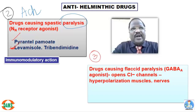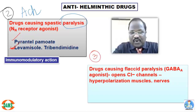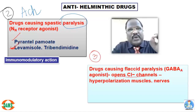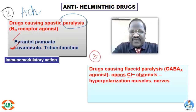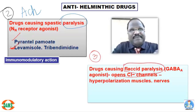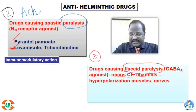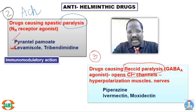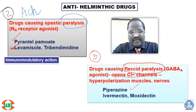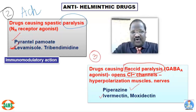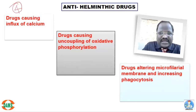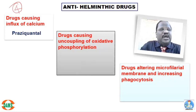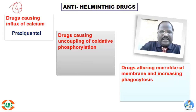The third classification: drugs acting via GABA-A receptor, causing opening of chloride ion channels. A large amount of chloride enters, causing hyperpolarization of nerves and muscle, thereby causing flaccid paralysis. This category includes piperazine, ivermectin, and moxidectin. The popular drugs are piperazine and ivermectin — very important. The fourth classification: a drug causing influx via calcium ion channels — that drug is praziquantel, the most popular drug.